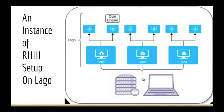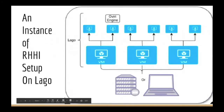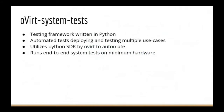Rather than using three different physical machines to recreate this setup, we simply use Lago to recreate our required hosts, and on top of those three VMs we recreate the virtual machines that would have been running on the physical hosts. We can run this from our laptop or a small server, which ensures we don't use a lot of resources and don't waste valuable resources on testing — keeping resources available for development. Our RHHI setup basically needs three VMs, and on one of those VMs we also have a hosted engine or oVirt engine VM which runs the tests.